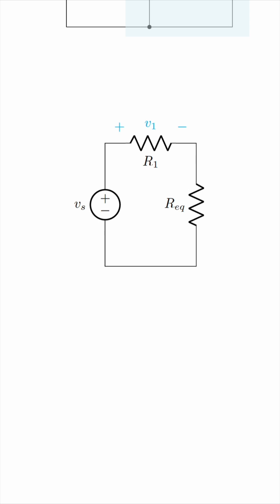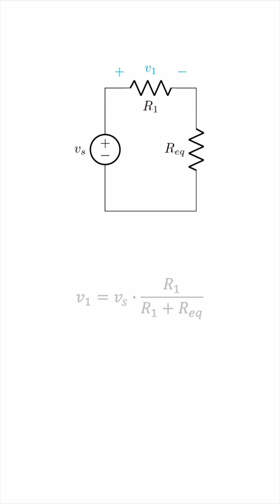Then, all you need to do is apply the voltage divider rule, and you'll get the voltage across R1 very easily.